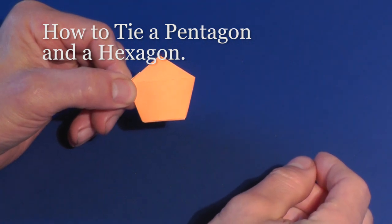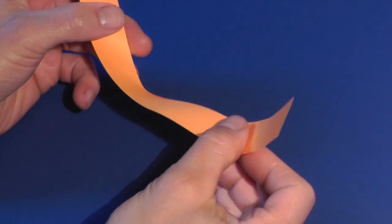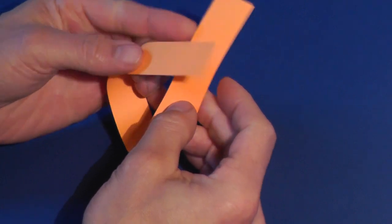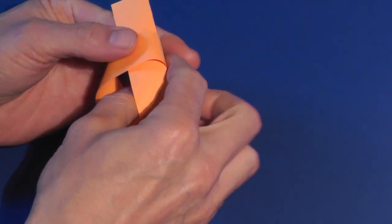I'll show you how to tie a strip of paper into a pentagon and a hexagon. To tie a pentagon, simply tie an overhand knot in a strip of paper.